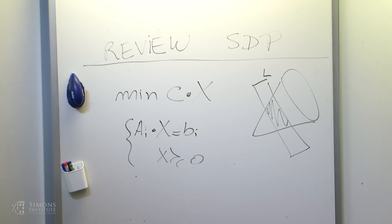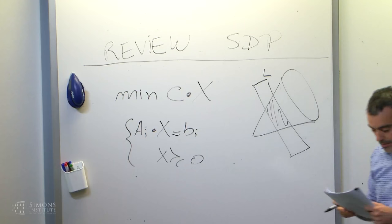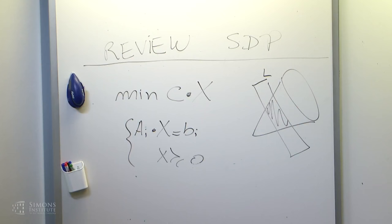Linear programming is exactly the same picture, except that this cone is a polyhedral cone — the non-negative orthant. So really, the difference between linear programming and semidefinite programming is that we go from the non-negative orthant, a polyhedral cone, to a non-polyhedral cone, which is the cone of positive semidefinite matrices. Semidefinite programming, like any conic program, comes with a nice dual.